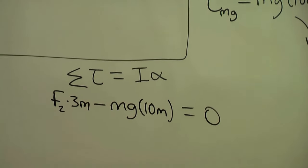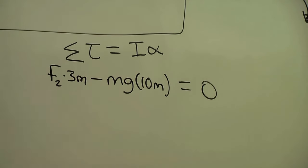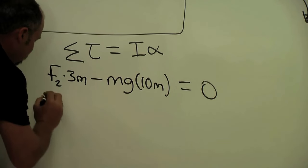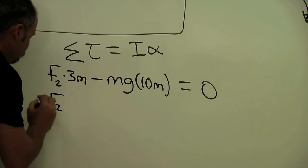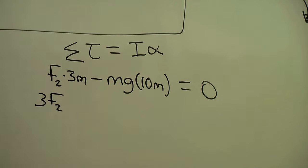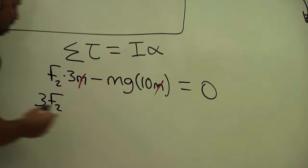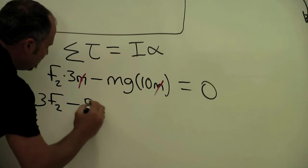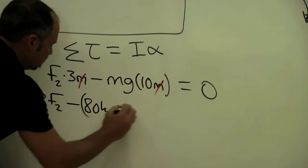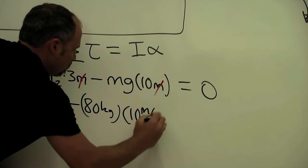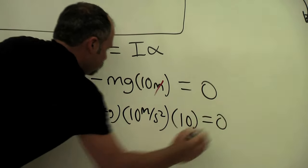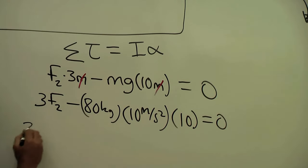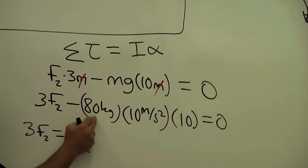And now we can solve for F2. I know that the mass we've set it to 80 kilograms, acceleration gravity's 10 meters per second squared, so canceling off the units of meters, we just have three F2 minus 80 kilograms times 10 meters per second squared times 10 equals zero. And therefore three F2 is equal to 8000 newtons.